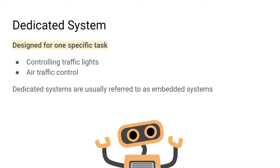A dedicated system is a computer system designed to complete one specific task. An air traffic control system in an airport is an example of a dedicated system. More commonly, a dedicated system is used in a piece of machinery designed to complete one specific task, and these can be referred to as embedded systems.